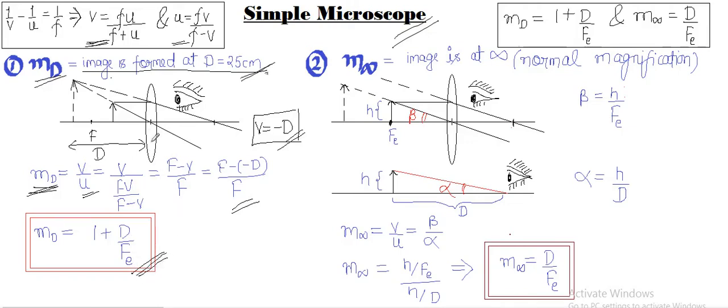We will be using this convex lens as our eyepiece. That is why in place of f I have written fe, because this lens we will be using as our eyepiece in both compound microscope and compound telescope. We will be using this formula.